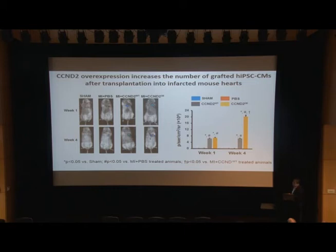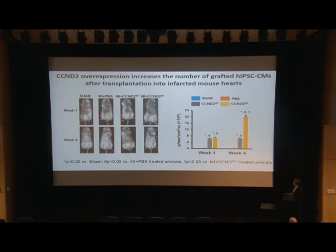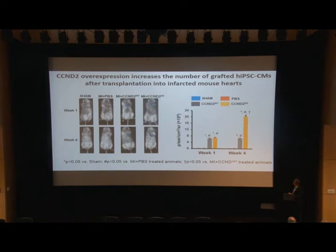We performed direct intramyocardial injection, and I want to emphasize that we used a very low number of cells — three intramyocardial injection sites, each with only 1×10⁵ myocytes. At one week and four weeks later, we assessed luciferase activity. At one week there was no significant difference between wild-type and Cyclin D2 cells in terms of luciferase activity in vivo. At four weeks, however, wild-type cells showed less luciferase activity while Cyclin D2 cells showed much higher luciferase activity.